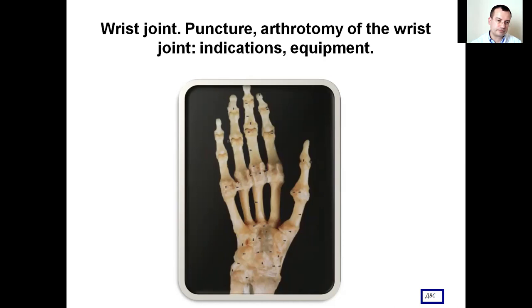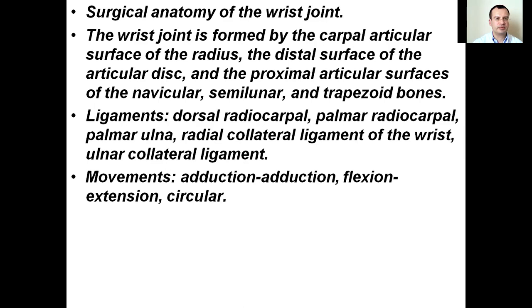Wrist joint surgical anatomy: the wrist joint is formed by the carpal articular surface of the radius, the distal surface of the articular disc, and the proximal articular surface of the navicular, semilunar, and trapezoid bones. Ligaments: dorsal radiocarpal, palmar radiocarpal, palmar ulnar, radial collateral ligament of the wrist, and ulnar collateral ligament. Movements: adduction, abduction, flexion, extension, and circular.